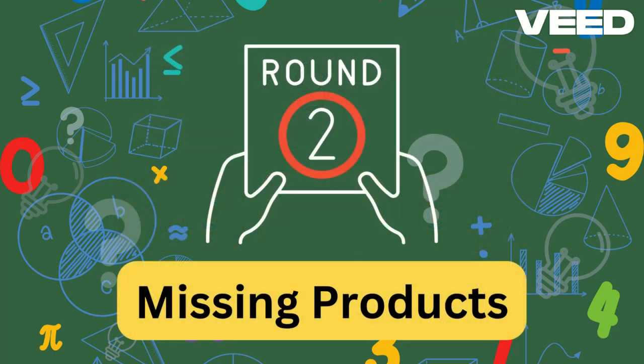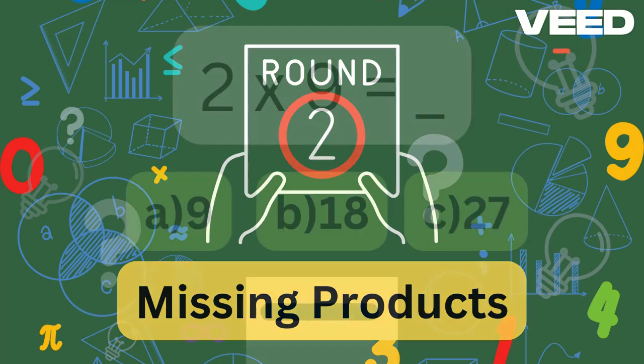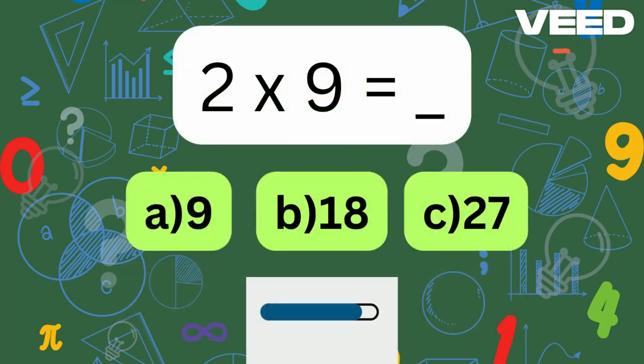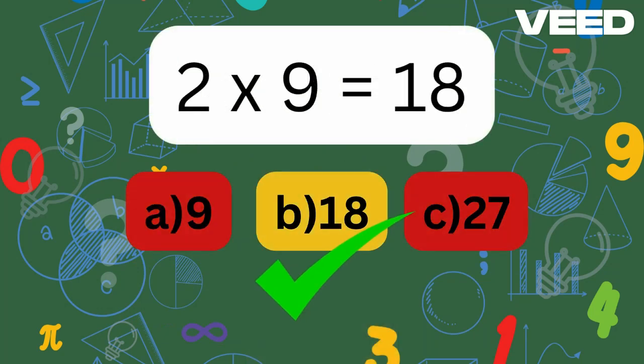Round 2: Missing Products. We'll see the numbers being multiplied, but the answer — the product — is missing. 2 times 9 is... 2 times 9 is equal to 18.